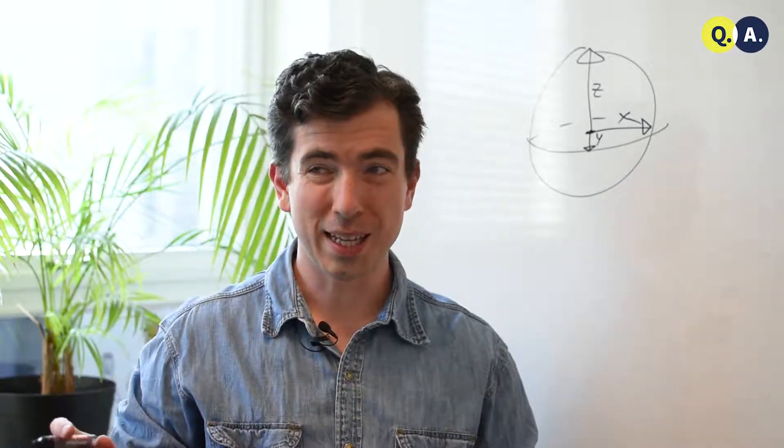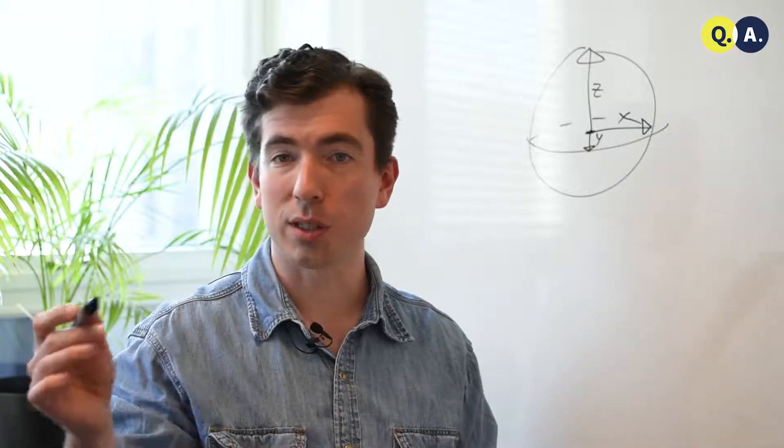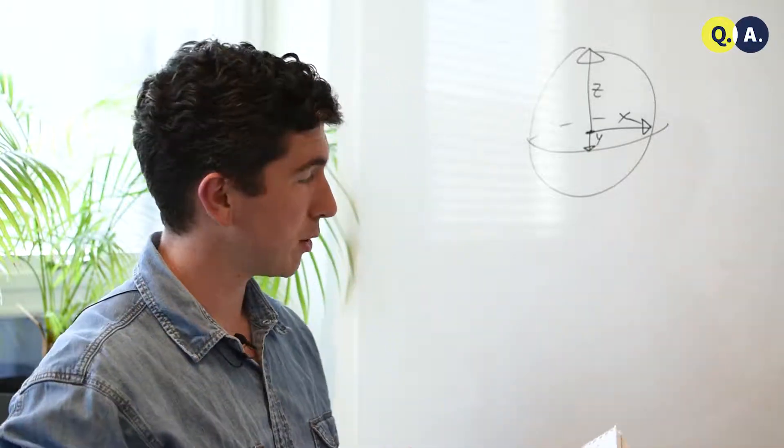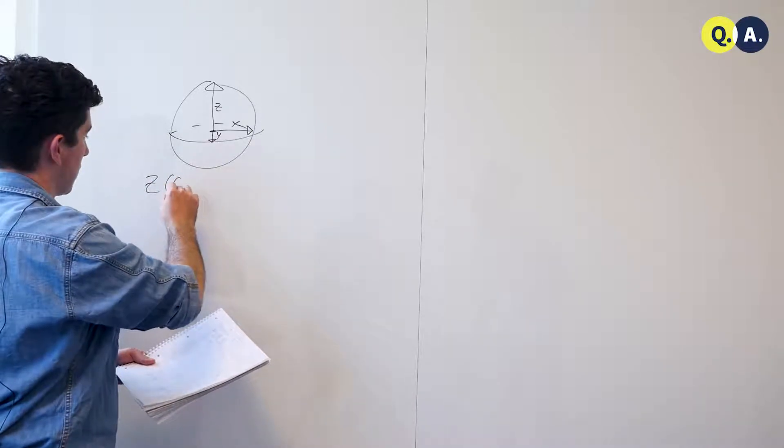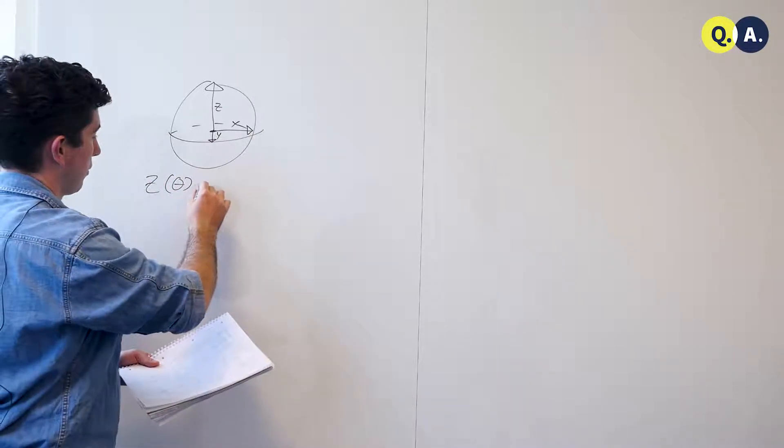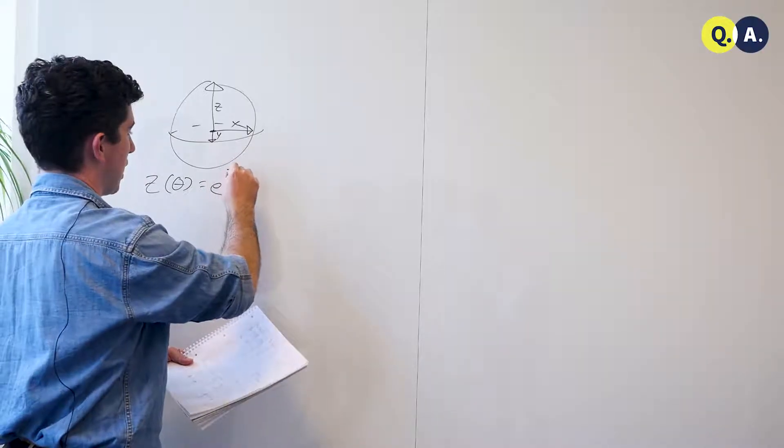Now, I happen to know the answer to this question, and I can begin by writing down the matrices that describe the operations that we'd like to do. So here's z, and I'll say this is z theta. For those of you who are really in the know, this is e to the i z theta.